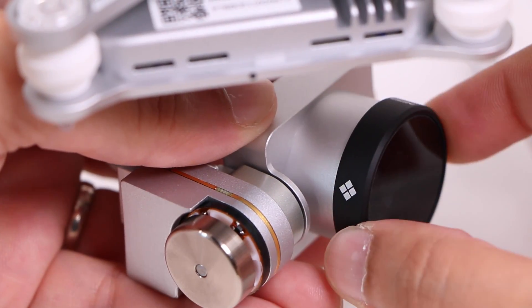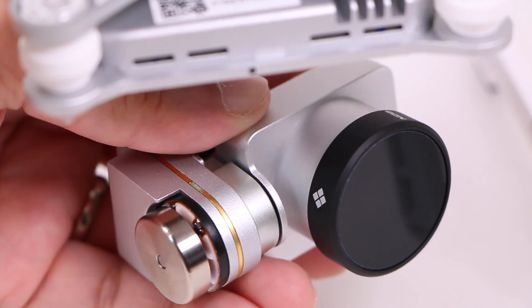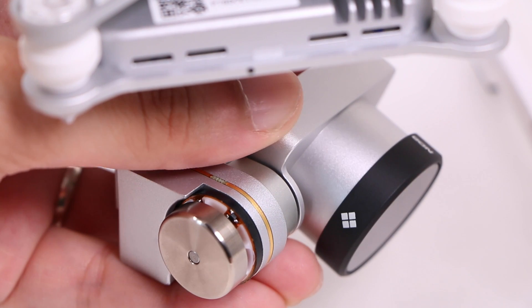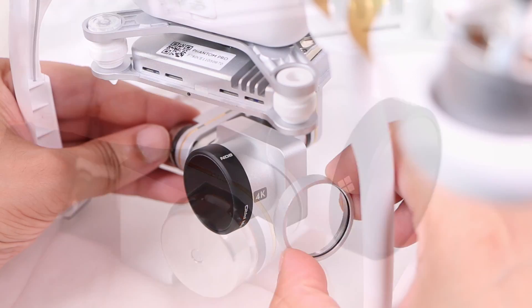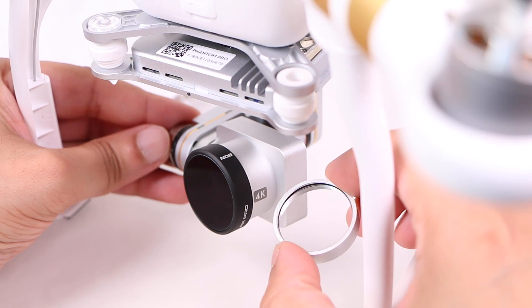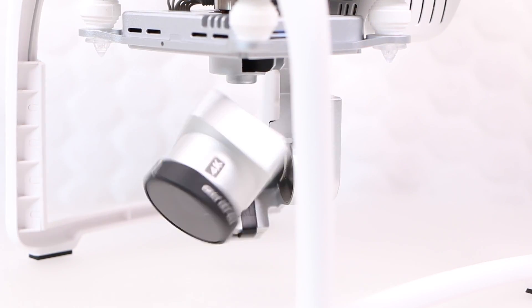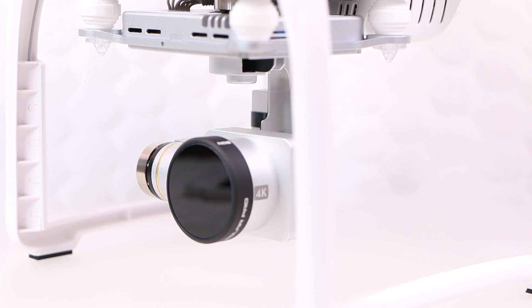Each ND filter weighs only 6.7 grams, although considering the stock UV filter weighs 3 grams in itself, users are only adding an extra 3.7 grams to the overall design. Needless to say, the entire solution is still plenty light enough for smooth gimbal operation.